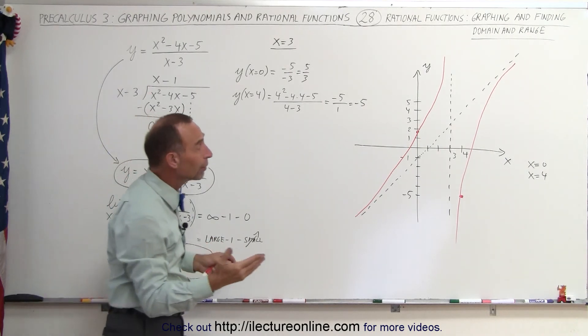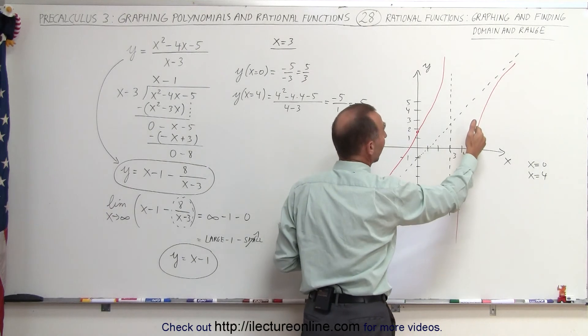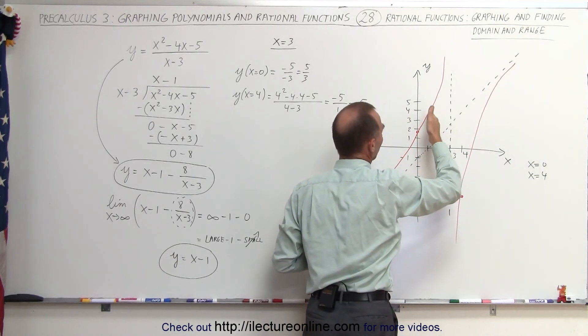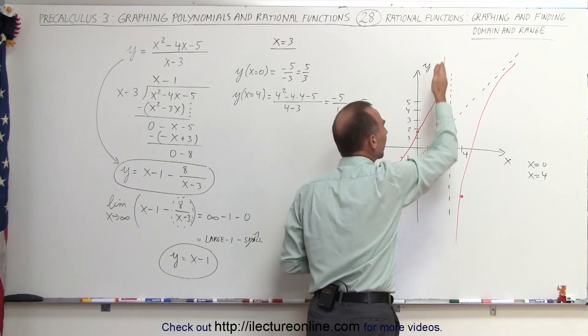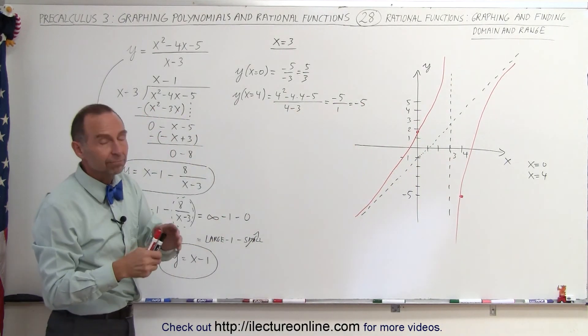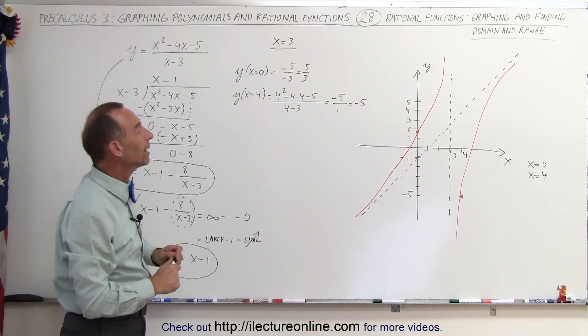If you're not sure, you can try a few more points. You can let x equals 5, x equals 6, x equals 7. Here you can let x equals 1, 2, and so forth to make sure that, yes, that indeed is the graph. Assuming that's correct, I believe it is, let's find the domain and the range.